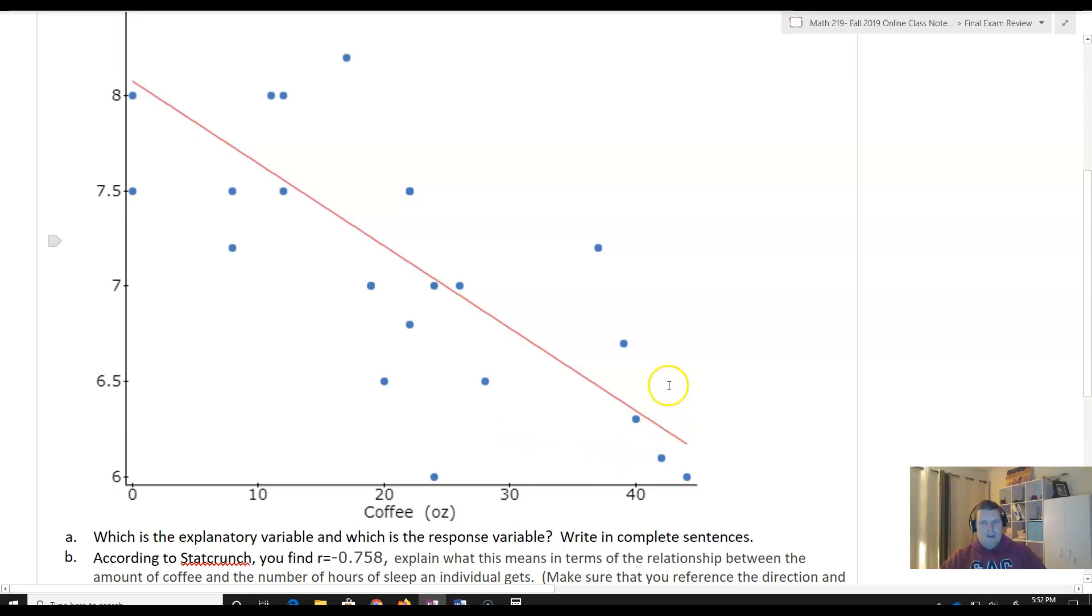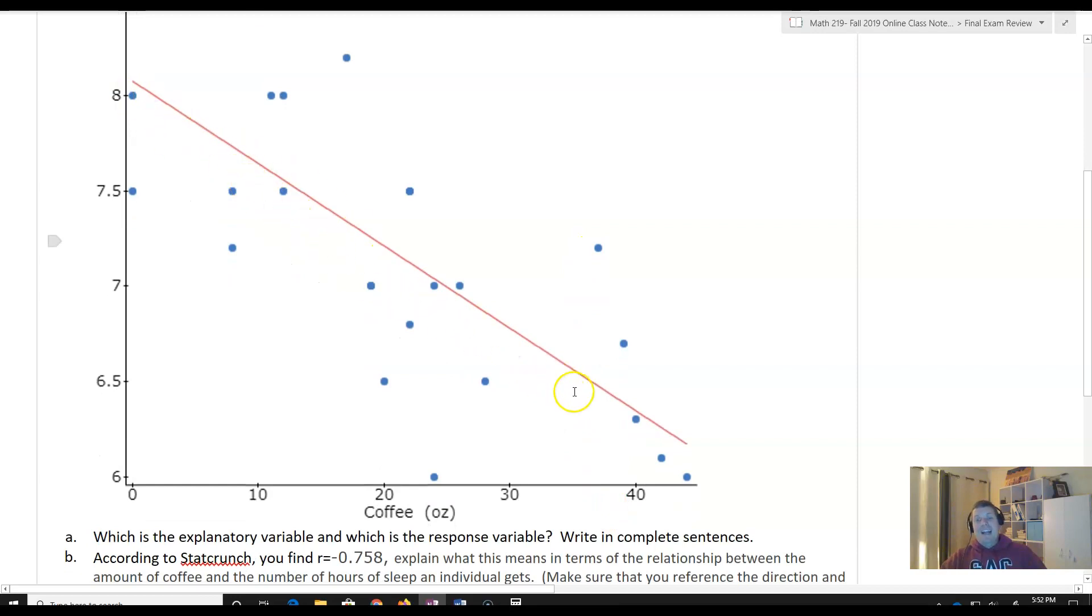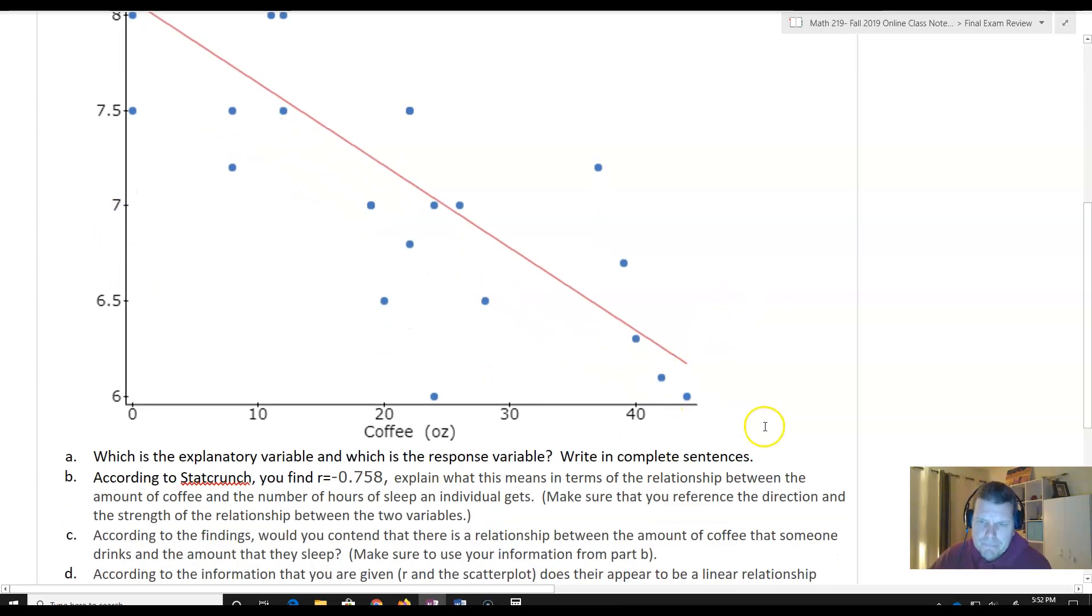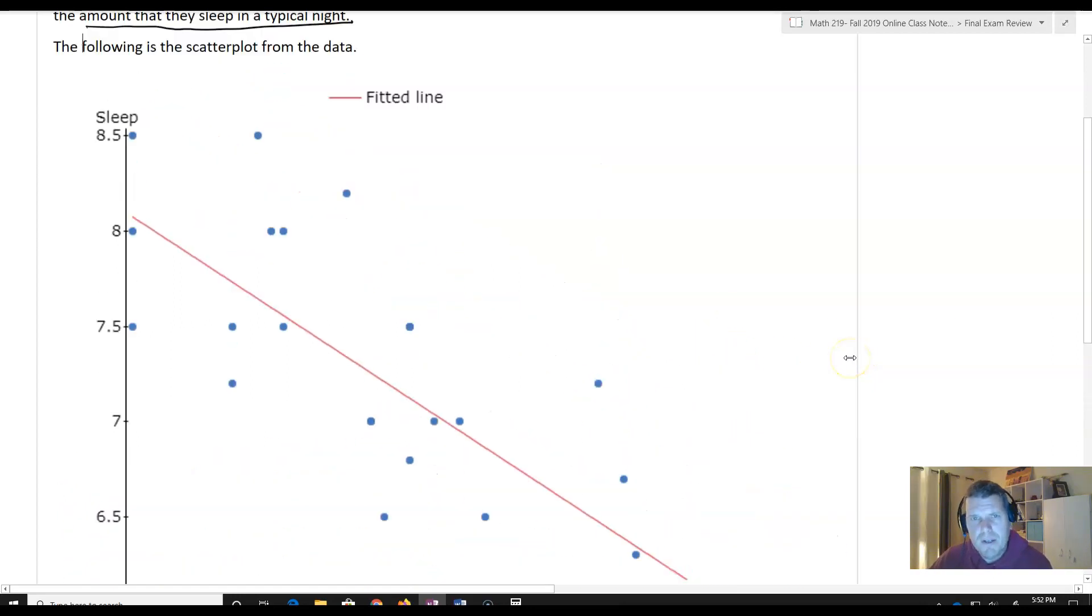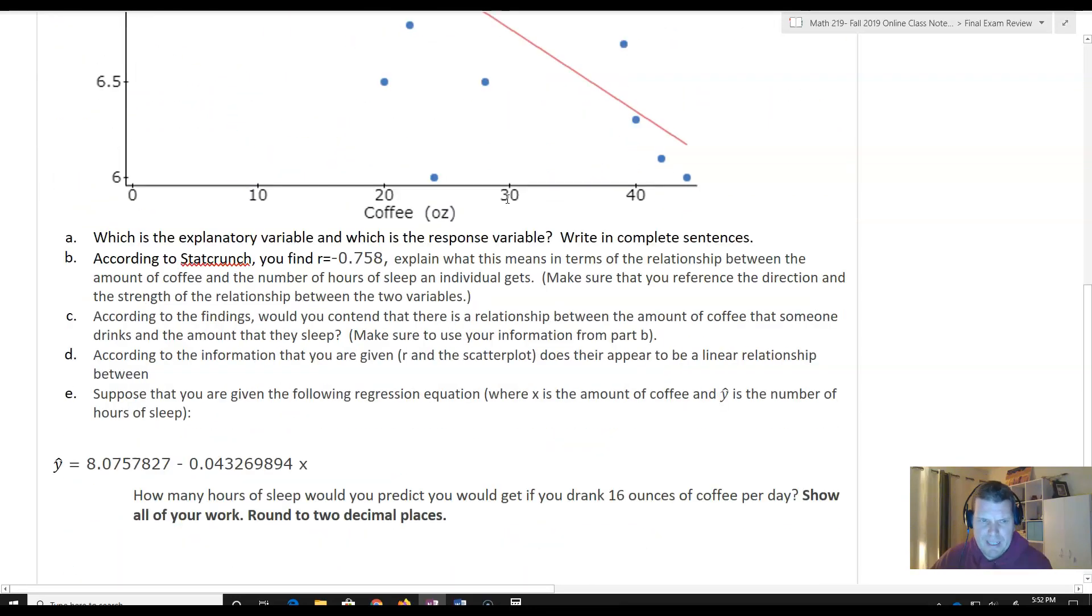I'm somewhere down here. I need to cool it on the coffee, but I do math. What are you going to do? Coffee is what we do. So as I increase the amount of coffee that I drink, what I'm going to get is I'm going to decrease the amount of sleep that I get. And that tells me that I'm going to have a negative correlation.